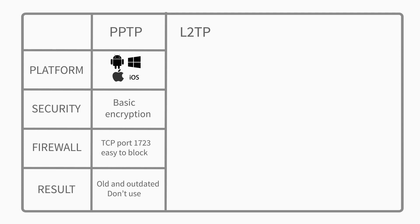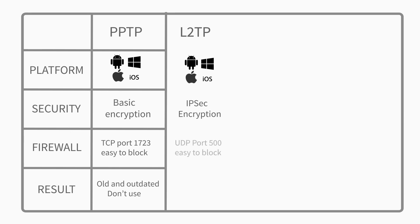L2TP, or Layer 2 Tunneling Protocol, is a better version of PPTP. It's just as easy and quick to set up, since it's also built-in to almost all modern operating systems. L2TP does not provide encryption on its own, so it's usually implemented with the IPSec authentication suite, which, unlike PPTP, is usually considered secure. The problem with L2TP comes with the firewall — it uses UDP port 500, which means it's much easier to block and harder to get around firewalls.